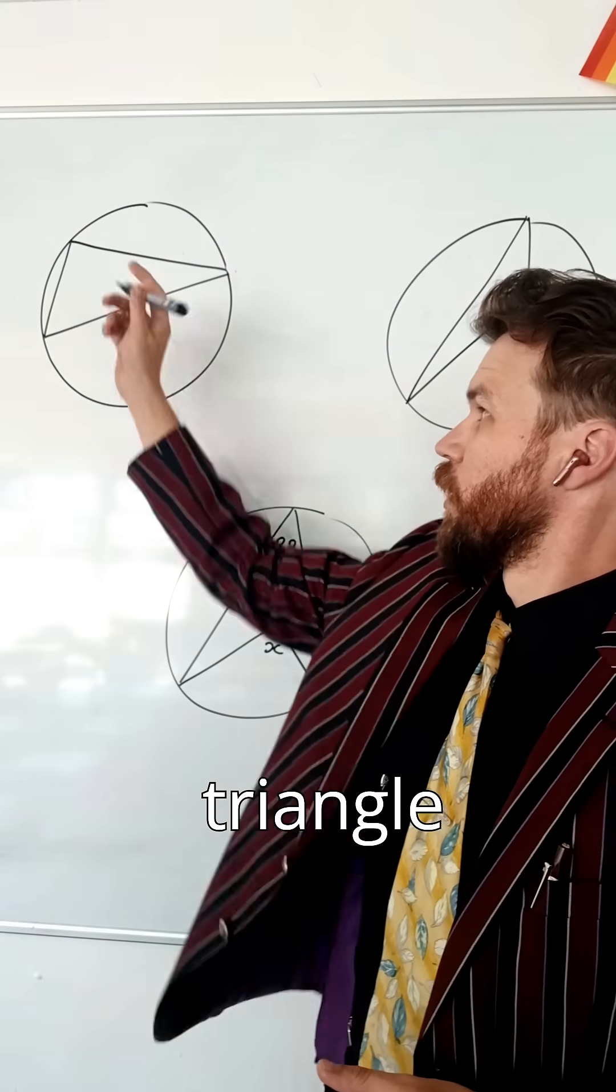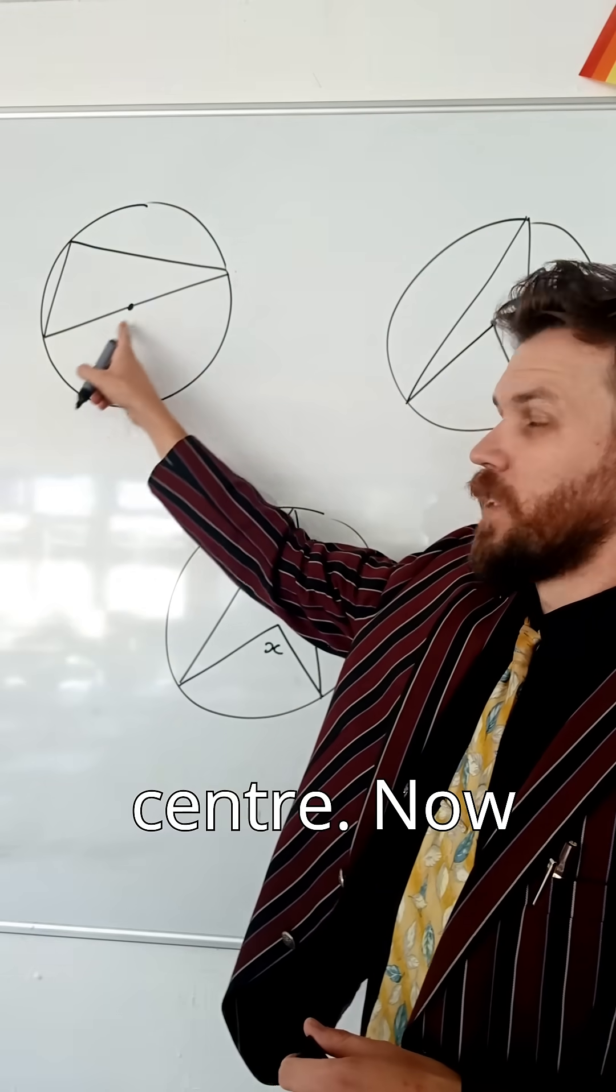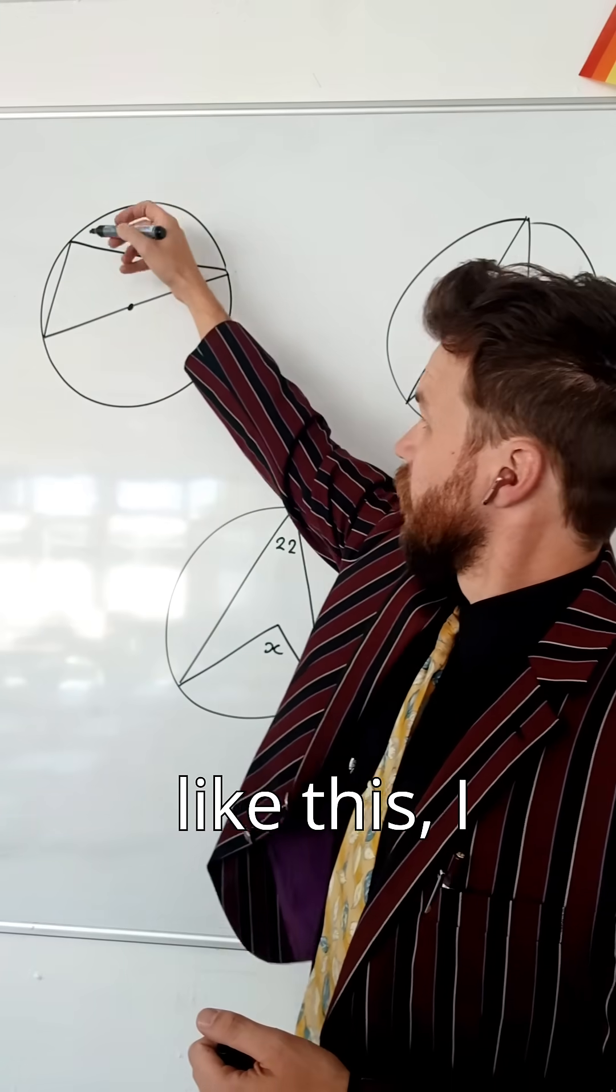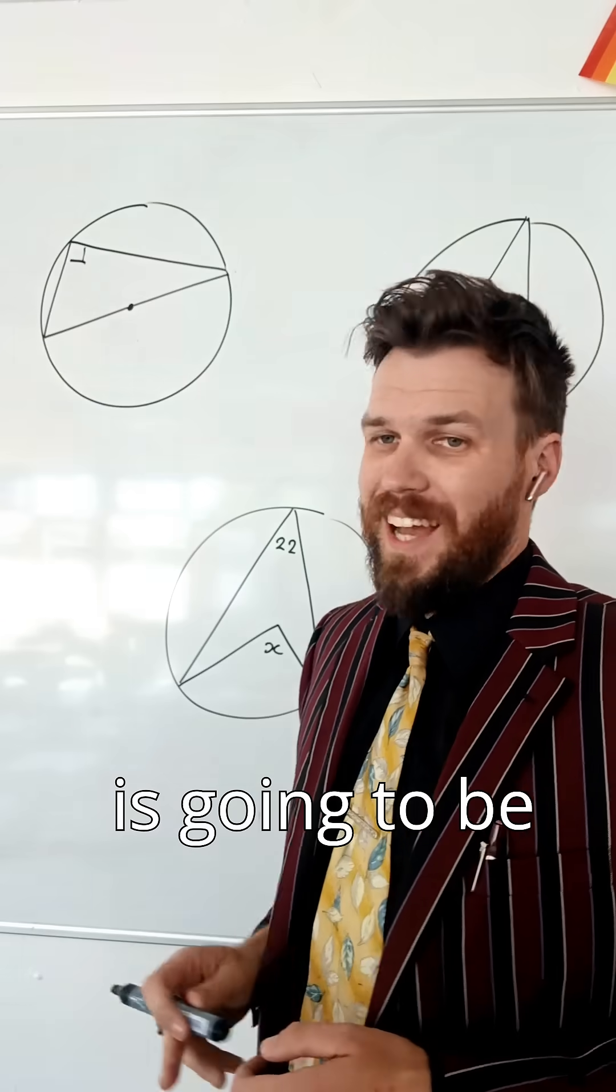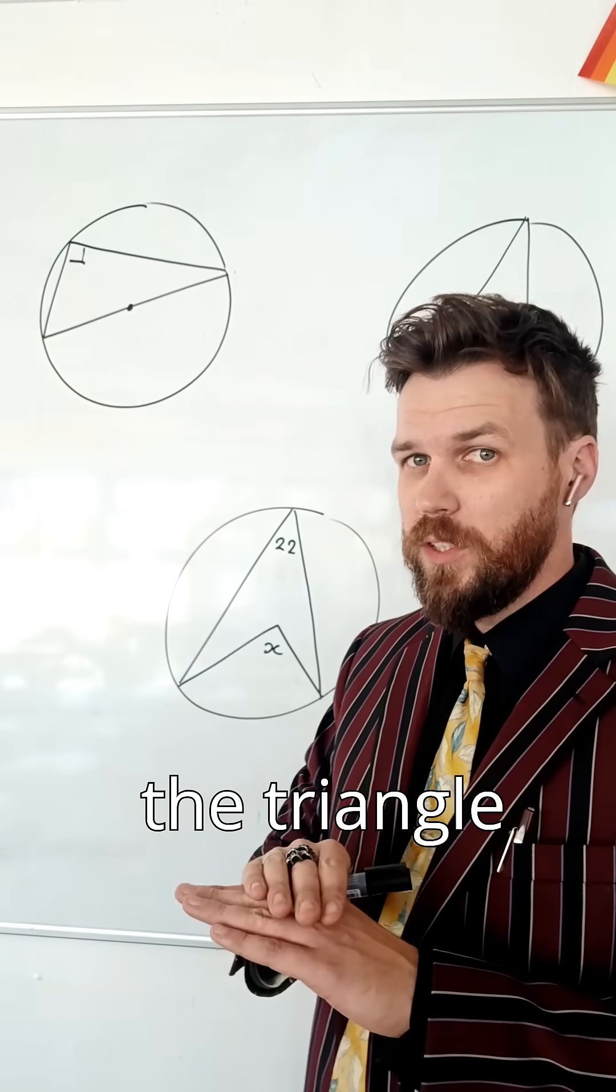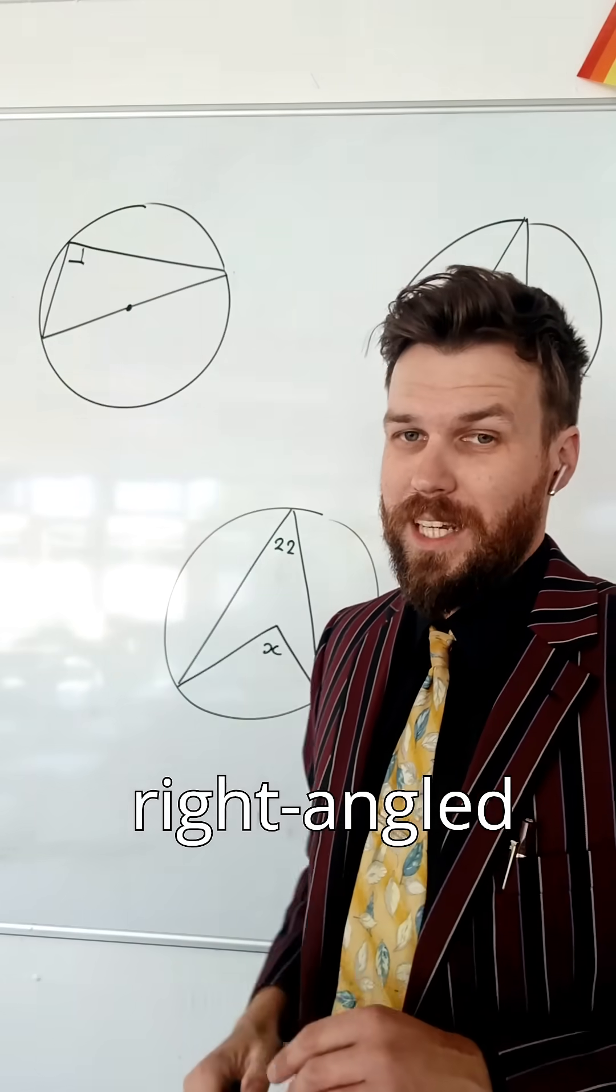Here I've got a circle with a triangle within it. The hypotenuse of the triangle goes right through the centre. Now, the rule for this is, any time I see a triangle like this, I know that that is going to be 90 degrees. Exactly. Every single time. Any time the hypotenuse of the triangle goes through the centre, it's going to form a right-angled triangle.